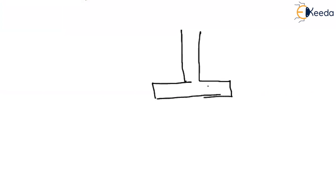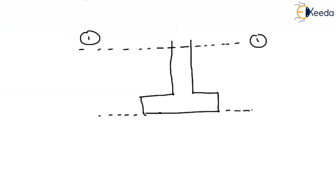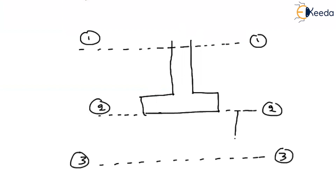Let me draw the foundation again. Let us consider a footing, and just recall the terms we considered in the previous videos for practice. This is the column, and this is level 11, which is also the ground surface level. This is level 22, which is the level of the foundation. Up to a certain depth we consider level 33. From level 11 to level 22 is the depth d, and from level 22 to level 33 is the width b of the footing.